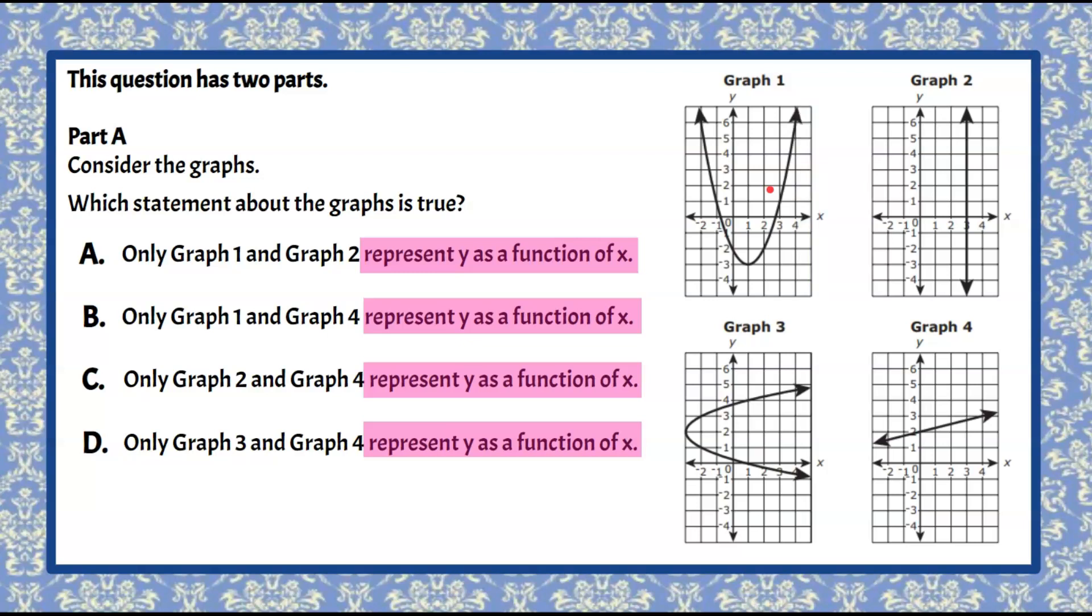So let's go back and try that again. We're gonna pass our pencil left to right and you can see that it's only ever passing through one point on the graph at a time. So this is a function because it passes the vertical line test.